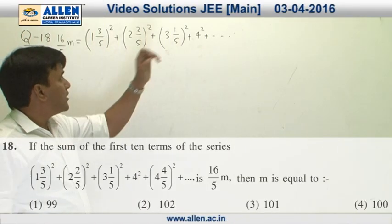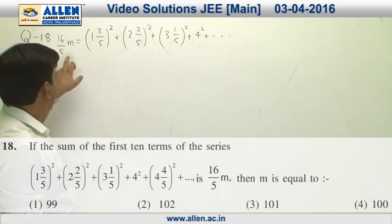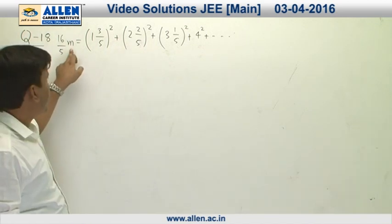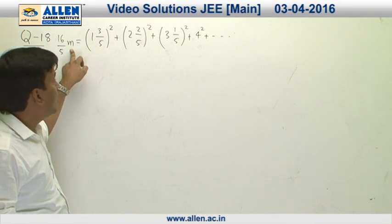In question number 18, this series has been given and the sum of this series is given as 16 upon 5 times m, and we have to calculate the value of m.